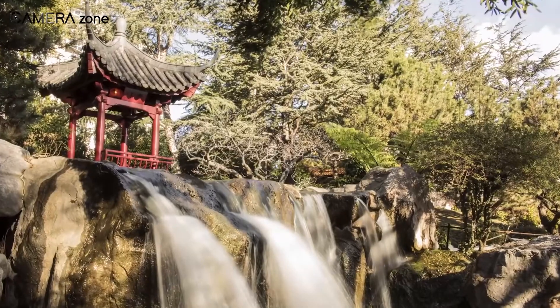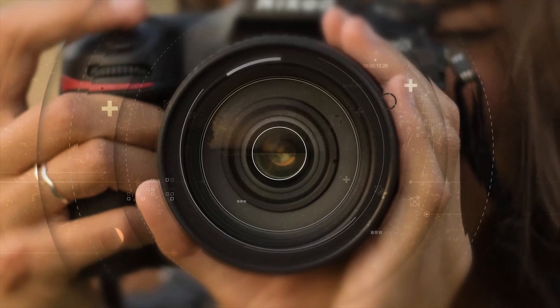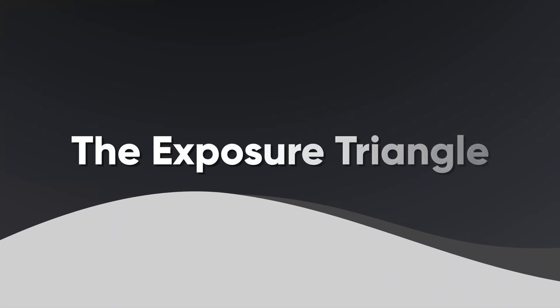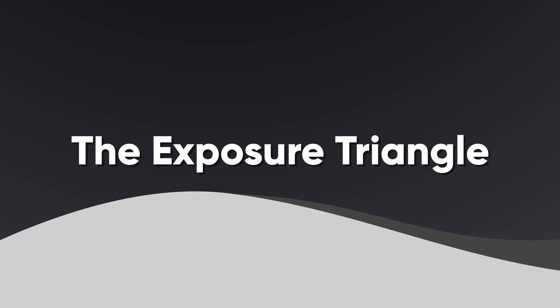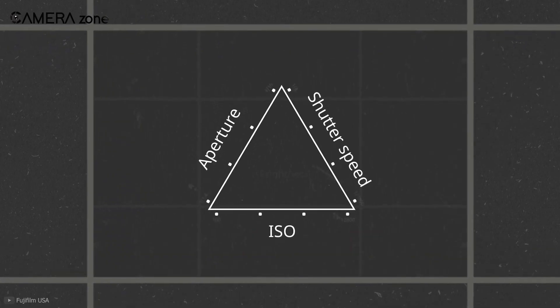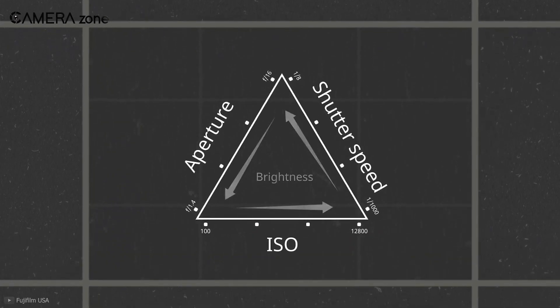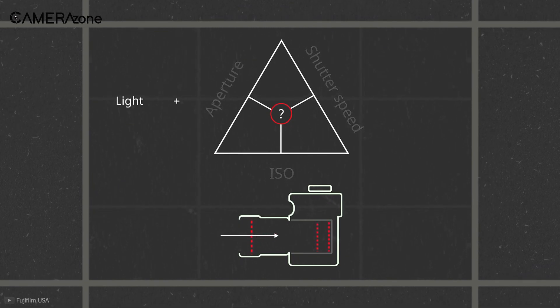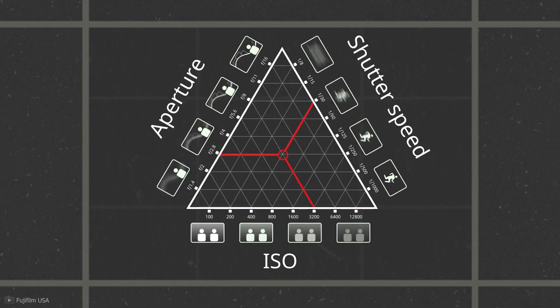There are three pillars of photography that are popularly known as the exposure triangle: ISO, aperture, and shutter speed. All three elements control the exposure of your image, and you might have to adjust them all at once to get the right exposure. Let's understand how to use each of them in your photography.